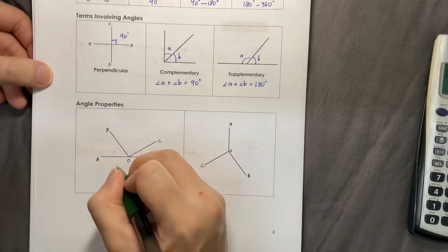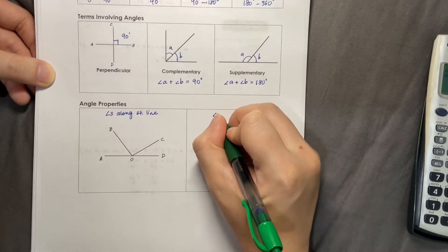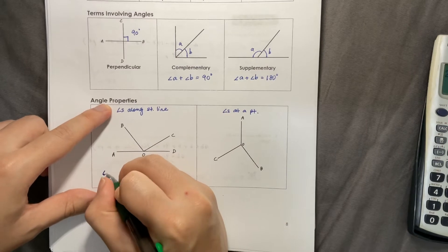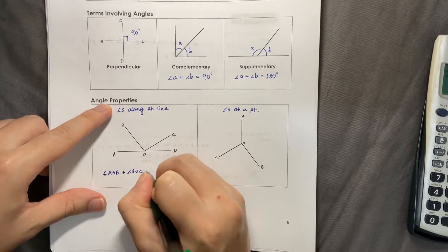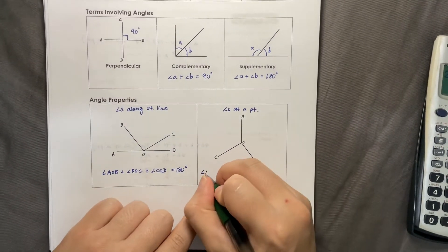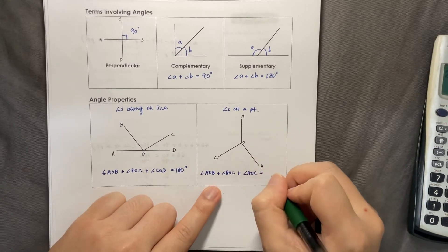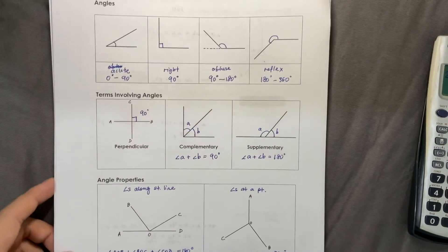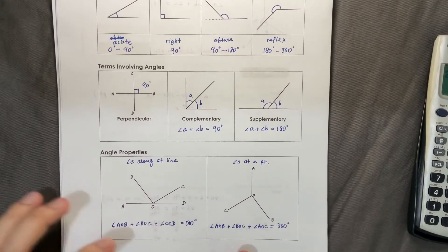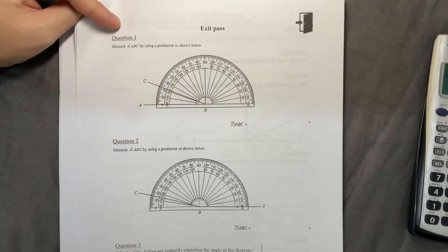Our angle properties: write down the short form. Angles along a straight line, and the next one is angles at a point. We need to write down the reason from secondary school onwards. Angle AOB plus angle BOC plus angle COD equals 180 degrees - add together 180 degrees. Whereas angles at a point: all angles at a point add up to 360 degrees. This is the summary for this chapter: different names of angles, different types of angles, and two angle properties. That's all for 9.2 angles. Remember to finish up the exit pass on pages 9 and 10.